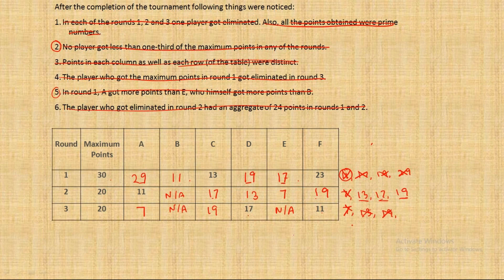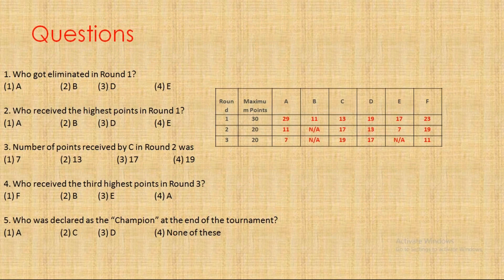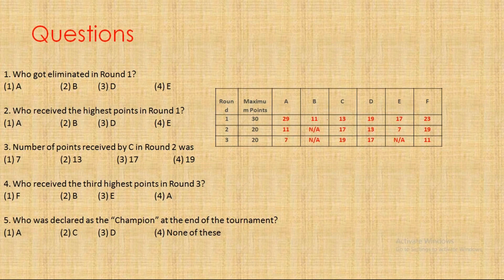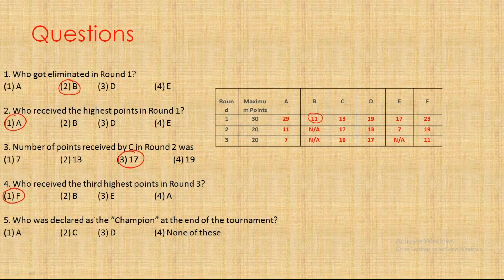If you have any doubt at any point please pause the video, go there, figure it out, sort it out and then get to the questions. So there are five questions, all can be quickly answered looking at the table. Who got eliminated in round one? In round one whose score is lowest? B got eliminated. Who received the highest points in round one? It was A. Number of points received by C in round two was 17, we just found it.